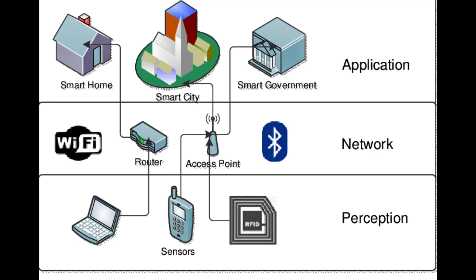The Perception layer represents the physical level of objects and interacts with the surrounding environment by collecting and processing information. This level includes objects that, being able to interact with the external world and equipped with computing capabilities, become in a certain sense intelligent or smart — where 'smart' refers to the technological aspects and 'intelligent' refers to the functional aspects: self-identification, self-diagnosis, self-testing, etc., of the sensor.